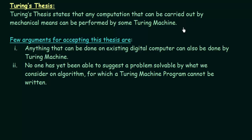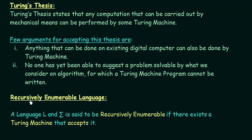Now let us see what languages can be accepted by a Turing machine. The languages that can be accepted by a Turing machine are known as recursively enumerable languages. A language L over input symbols Sigma is said to be recursively enumerable if there exists a Turing machine that accepts it. Finite state machines accept regular languages, pushdown automata accept context-free languages, and Turing machines accept recursively enumerable languages.